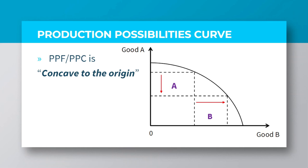The diagram shown on the screen depicts a situation where producing more of good B tends to sacrifice more of good A, and the other way around as well. This shows that as more outputs of good B is produced, the opportunity cost — that is, how much of good A must be sacrificed — also increases. Thus, it is proper to say that the concave nature of the production possibilities curve shows increasing opportunity cost or trade-offs between the goods.